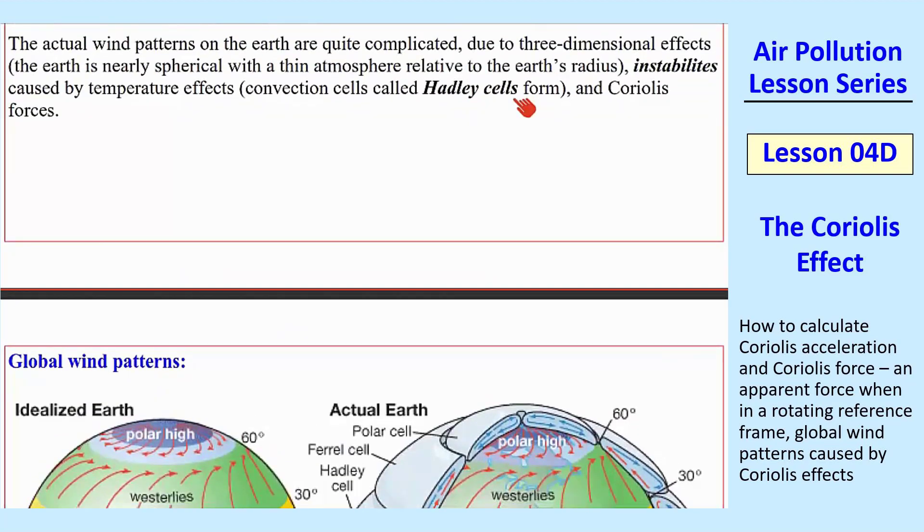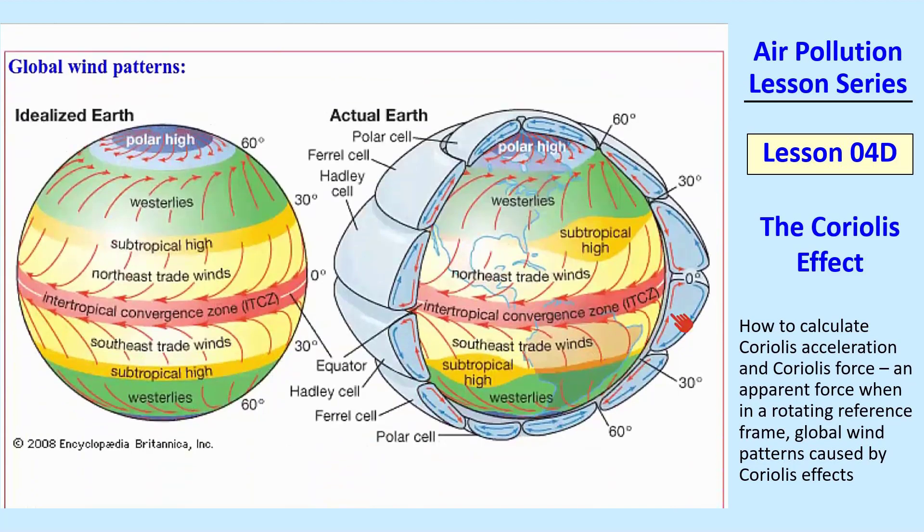These Hadley cells form, and there's grouping of these, so that you've got this circulation hot air near the equator rises, and that causes this kind of convection cell here. Then it goes the opposite here. There's three of those rings in the northern hemisphere and the opposite in the southern hemisphere.